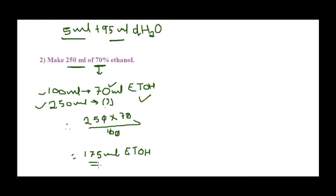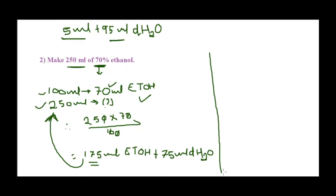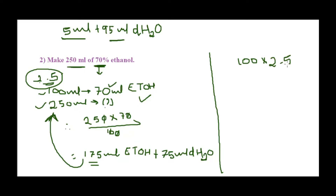The calculation: 250 × 70 ÷ 100 = 175 ml of ethanol. So I take 175 ml of ethanol and make it up to 250 ml. The remaining 75 ml is distilled water, giving 70% ethanol in 250 ml. Alternatively, the scaling-up method: from 100 ml to 250 ml is a 2.5× scale-up.